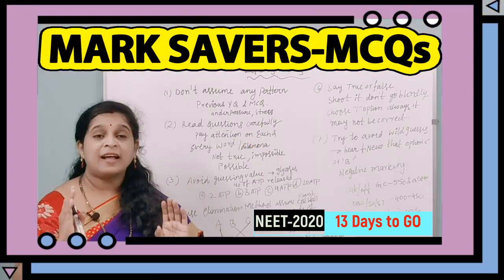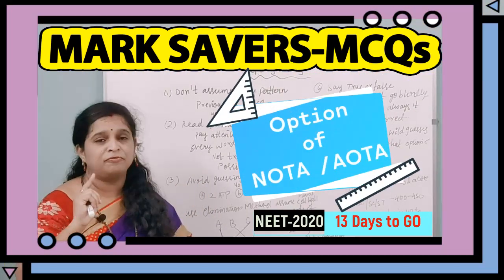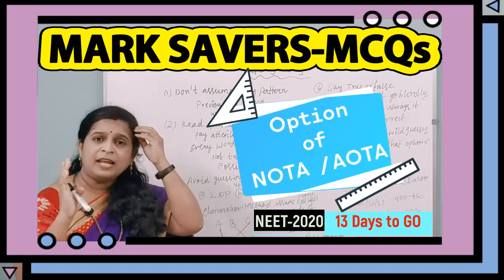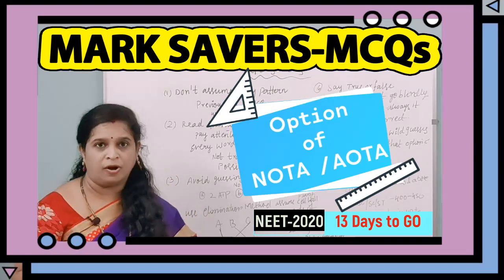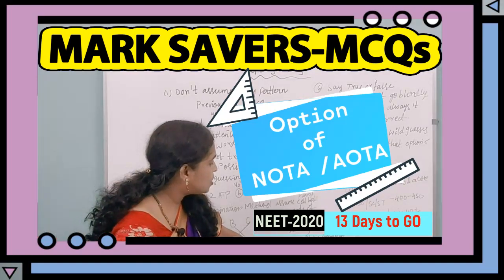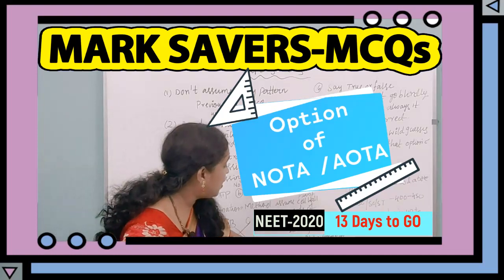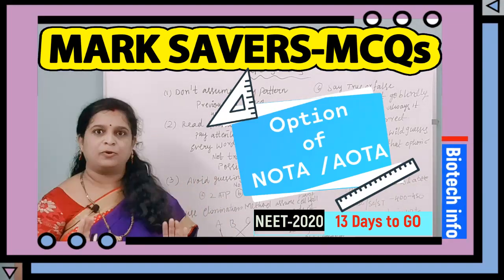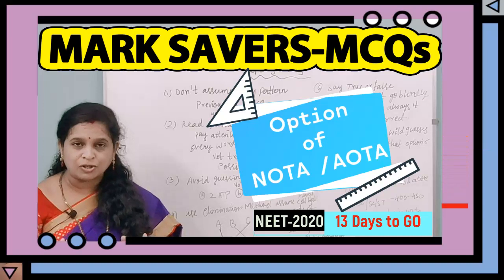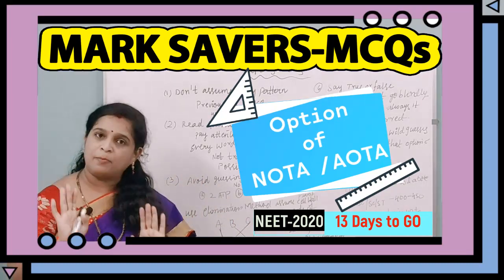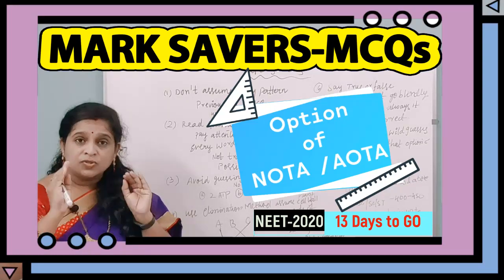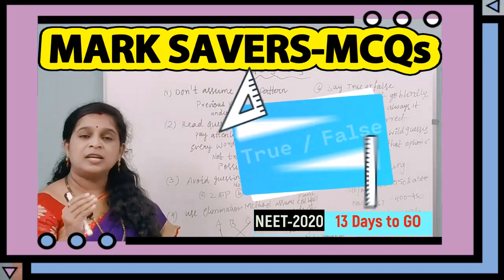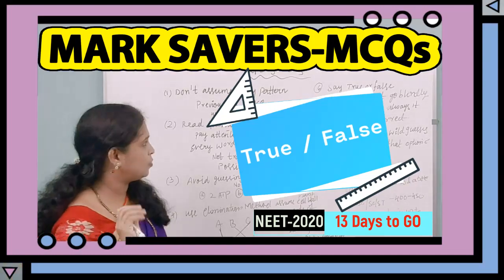Many students are in a dilemma about whether to opt for NOTA — None of the Above — or 'All of the Above.' According to studies, NOTA (none of the above) is correct 21% of the time, and 'All of the Above' is correct 38% of the time. Don't hesitate to choose these options. When question framers include them, they are valid choices. If the answer is not clearly in options A, B, or C, go for it. About 20% of true options and 20% of false options are also correct.